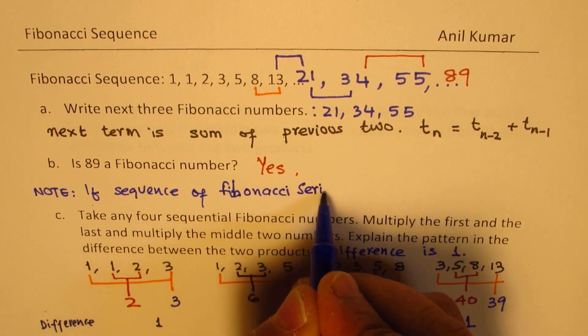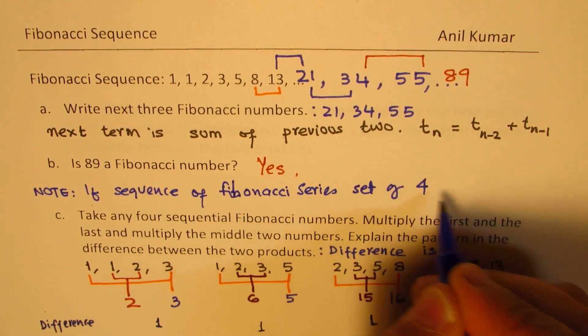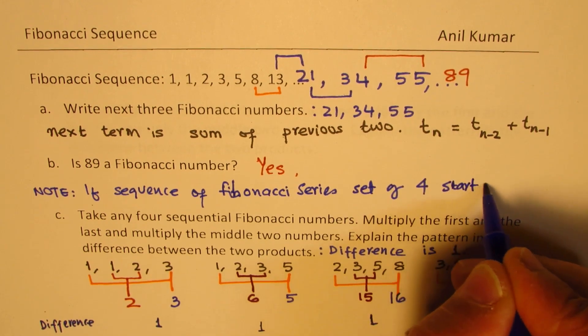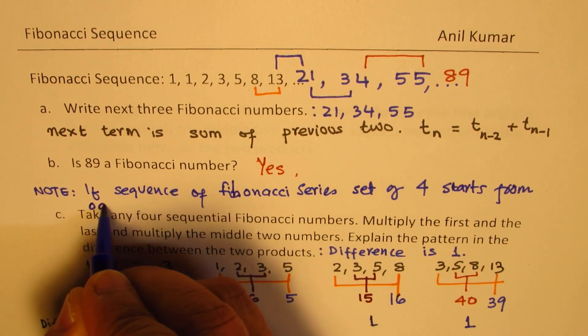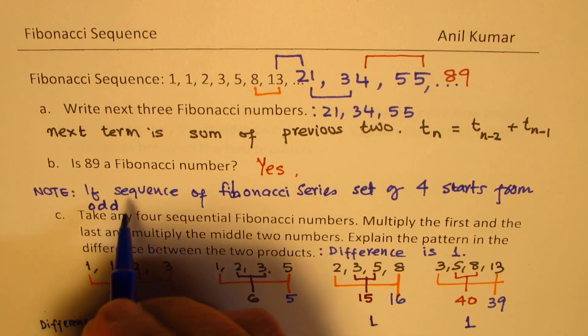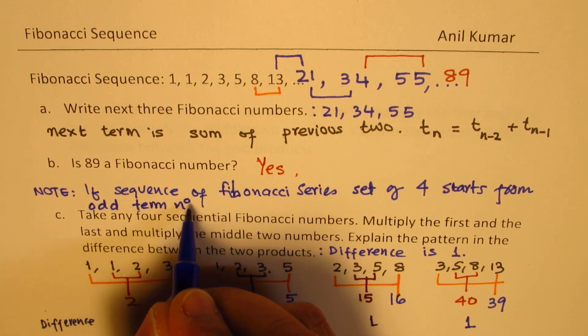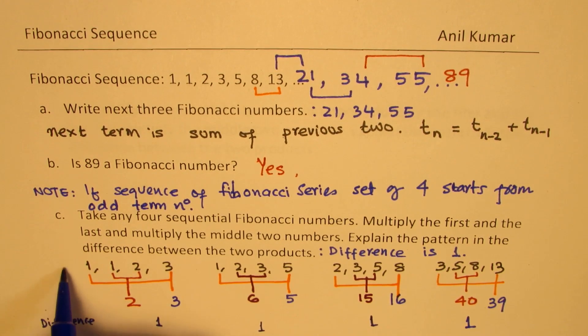a set of 4, starts from an odd position—odd term number—this is the odd term, starting with the first position,